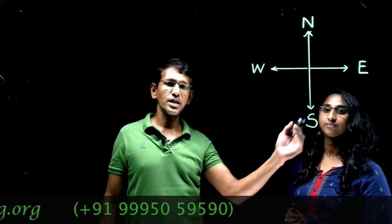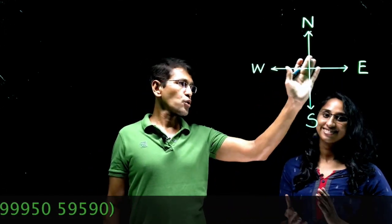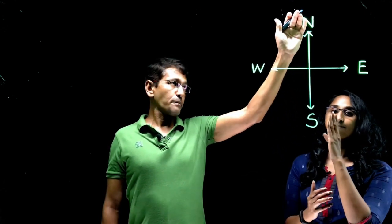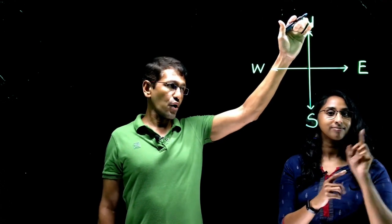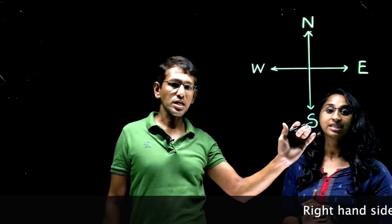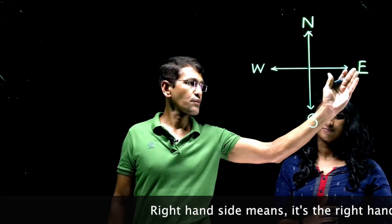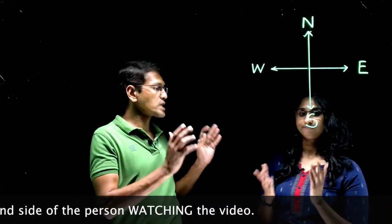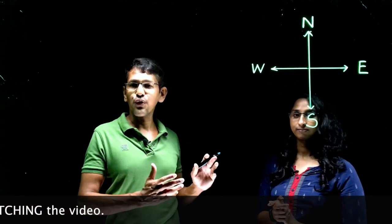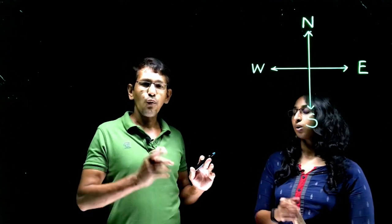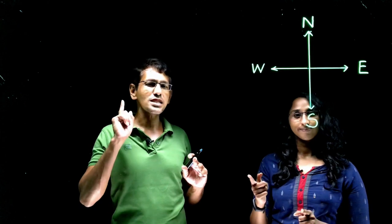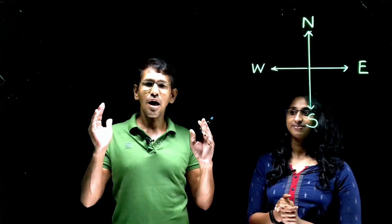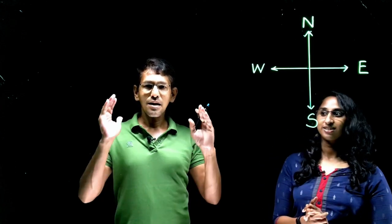This is East — this is standard notation. If you look at a blueprint, the upper side of that paper would be North, the lower side South, the right-hand side East, and the left-hand side West. Now the question is how many directions we have — is it four? No. Have you heard about Ashta Dikpalaka? Ashta means eight, so Ashta Dikpalaka means eight directions.